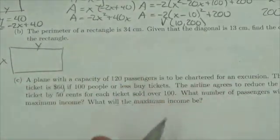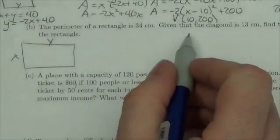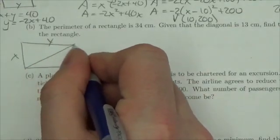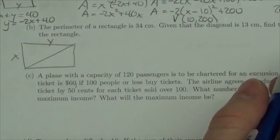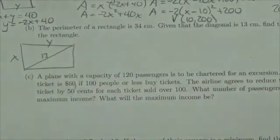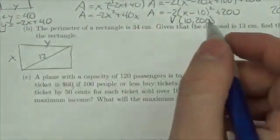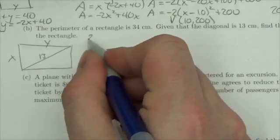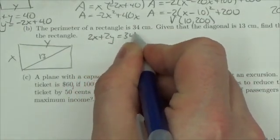The perimeter of a rectangle is 34. Okay, well rectangle, that's x, maybe that's y. And it says that the diagonal is 13. Find the dimensions of the rectangle. Okay, well this is 13 here. What that means is a couple of bits of information. First of all, I know that 2x plus 2y must equal 34.